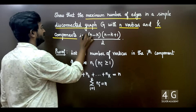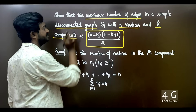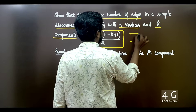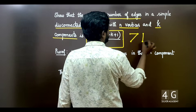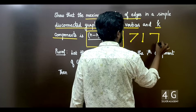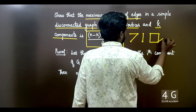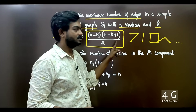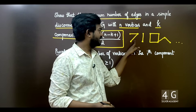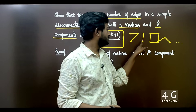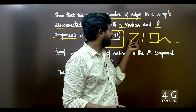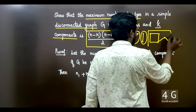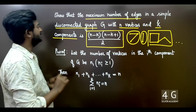Now let's use the proof. What kind of graph is the disconnected graph? For example, we have a graph. This is a fully-away graph. This graph is connected — this dot is connected, this dot is connected. So this graph is connected, it is one component.